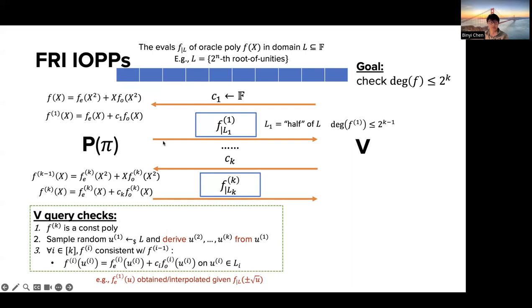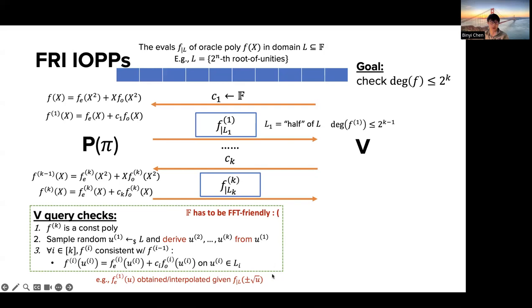An inherent limitation of this scheme is that the field must be FFT-friendly for two reasons: first, you need to perform Reed-Solomon encoding in each round using FFT-like algorithms; second, the domain L must be smooth so you can easily go from domain L_i to L_{i+1} using simple algebraic operations — specifically, just squaring or taking square roots. These are the two reasons an FFT-friendly field is required. The natural question is: can we generalize beyond Reed-Solomon codes?